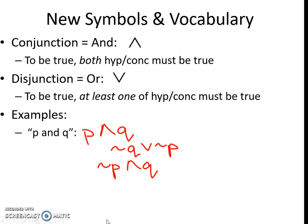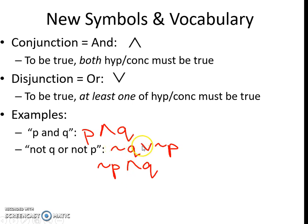So if you have P and Q, you're going to write P, this symbol, and Q. This means P and Q. NOT P or NOT Q will be written with the negation sign and then the OR symbol pointing down. This means NOT P or NOT Q.